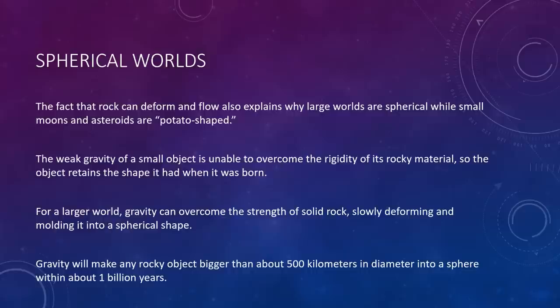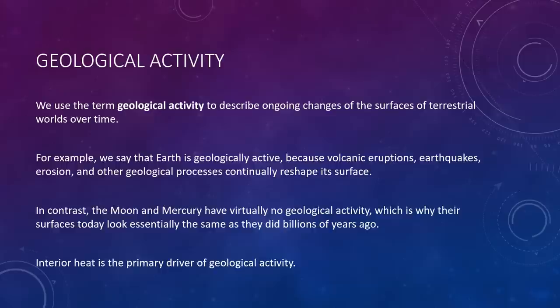The fact that rock can deform and flow also explains why large worlds are spherical, while small moons and asteroids are more potato-shaped or randomly shaped. The weak gravity of a small object is unable to overcome the rigidity of its rocky material, so the object retains the shape it had when it was born. For a larger world, gravity can overcome the strength of solid rock and slowly deforms and molds it into a spherical shape. Gravity will make any rocky object bigger than about 500 kilometers in diameter into a sphere within about a billion years. Larger worlds become spherical more quickly, especially if they are molten or gaseous at some point in their history.